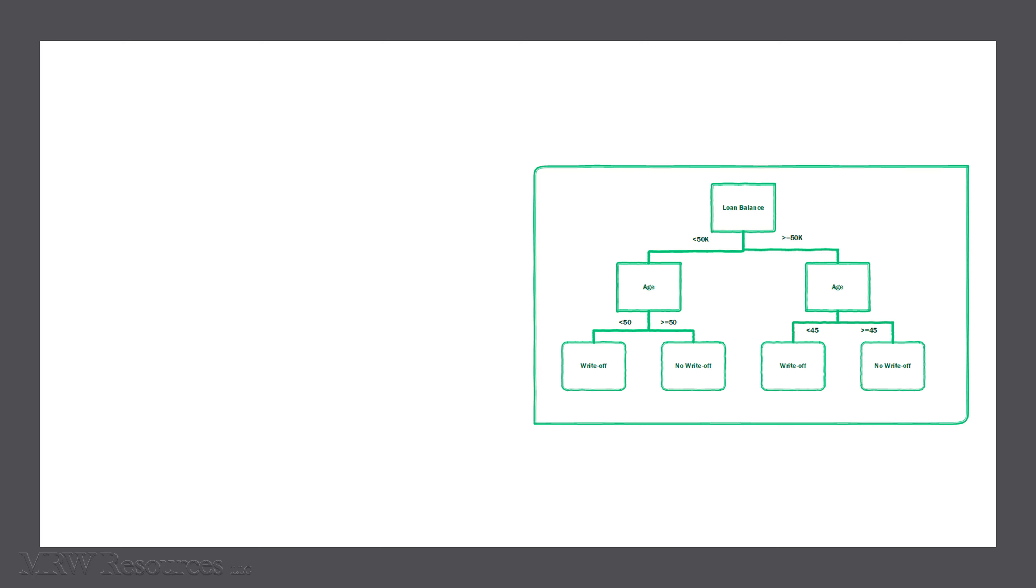So we can consider this decision tree as a branching diagram, as you see here. But we can also think of it as a set of decision boundaries that we create in our data space.